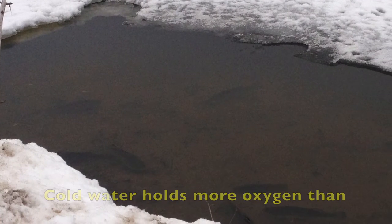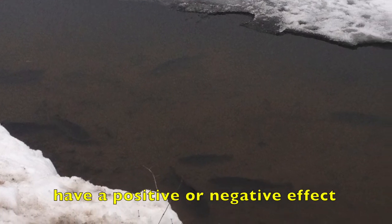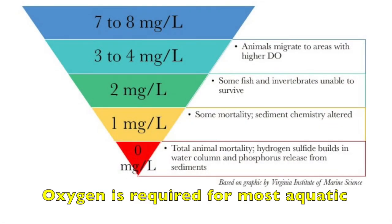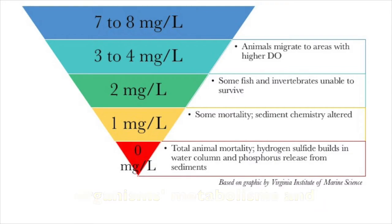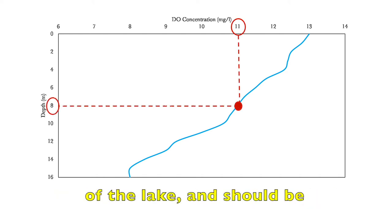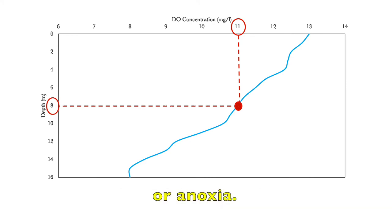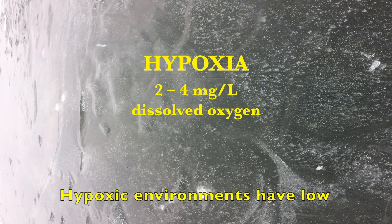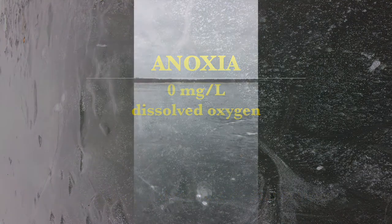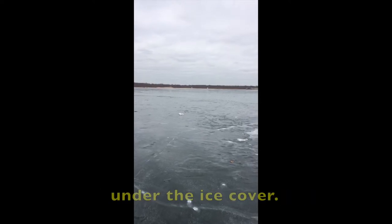Cold water holds more oxygen than warm water, which can either have a positive or negative effect depending on the species present within the water body. Oxygen is required for most aquatic organisms' metabolisms and can become limiting at five parts per million. Oxygen profiles show the level of DO throughout the entire depth of the lake and should be monitored for hypoxia and/or anoxia. Hypoxic environments have low dissolved oxygen and anoxic environments have no dissolved oxygen. Dissolved oxygen is added to the lake through diffusion across the surface; however, wind cannot create turbulence to add DO under the ice cover.